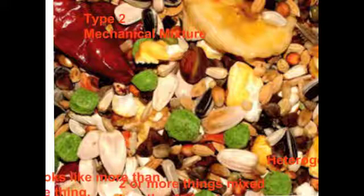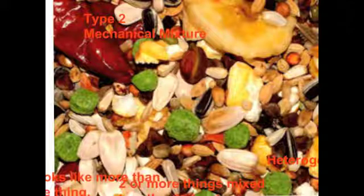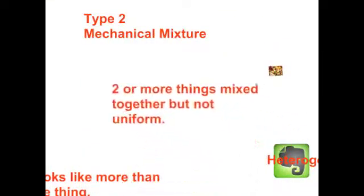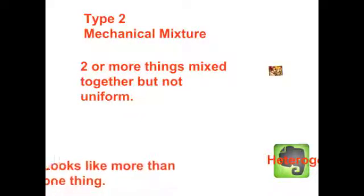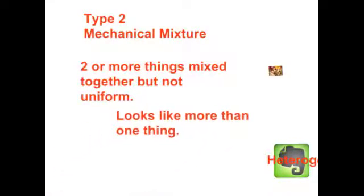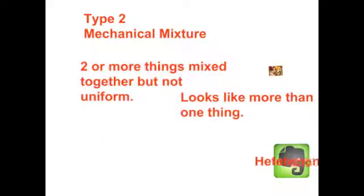You'll need Evernote for this part. Type two, mechanical mixtures. The picture you see before you is a mechanical mixture. It's just a jumble of things, and you can identify different parts. So a mechanical mixture are two or more things that are mixed together, but not uniform. It looks like more than one thing. A good term to use for that is heterogeneous. I'll let you write this in Evernote and give you a little bit of time.